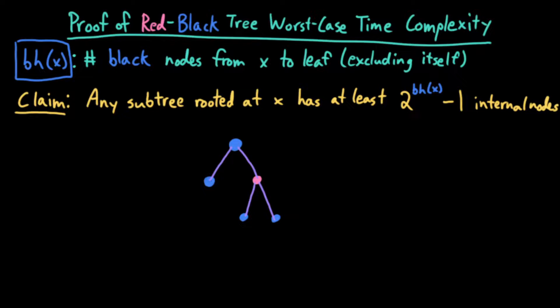We introduced the red-black tree as an extension of a binary search tree that has a guaranteed O(log n) worst case time complexity to find an element. So let's actually prove this worst case time complexity.